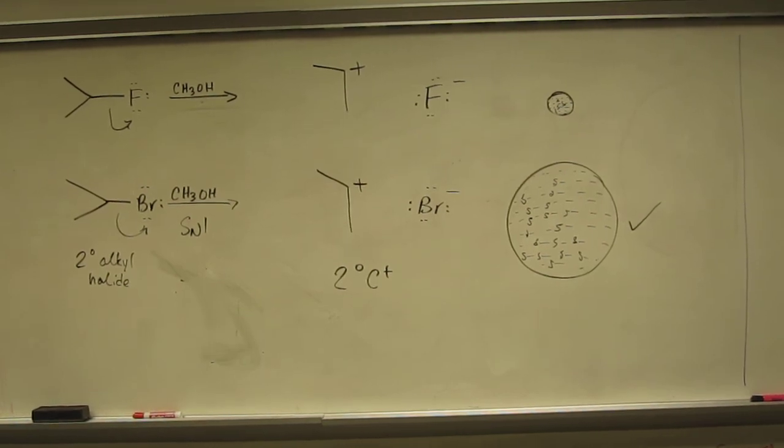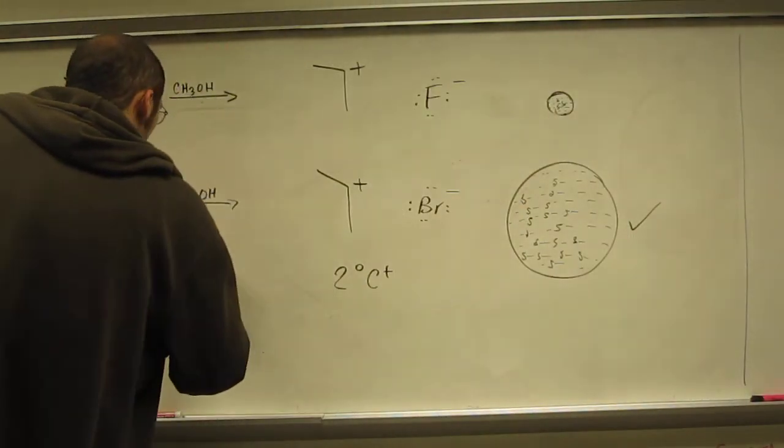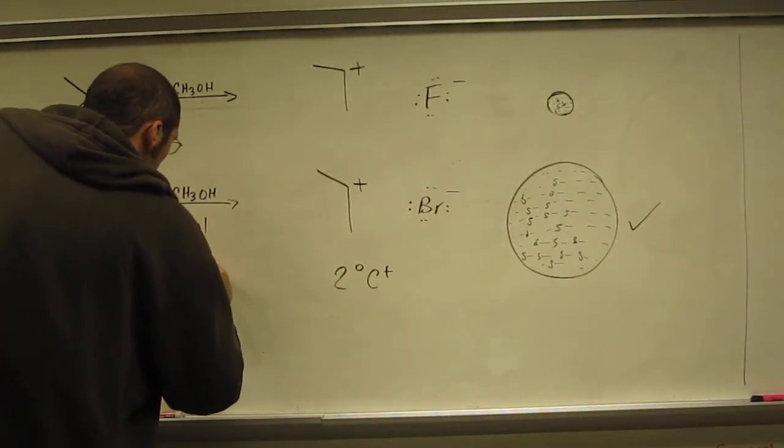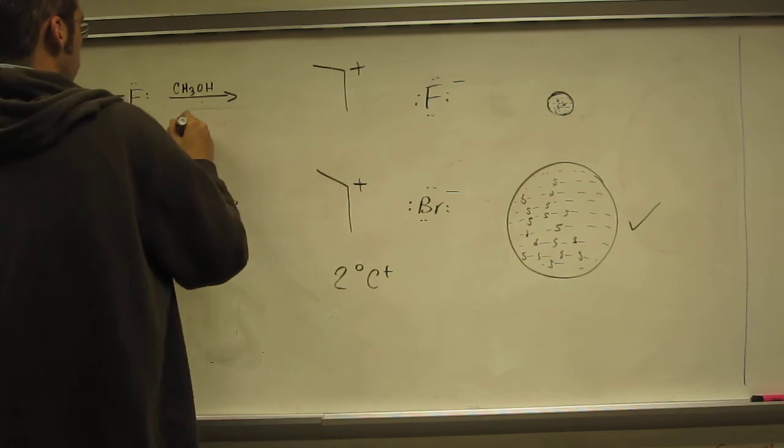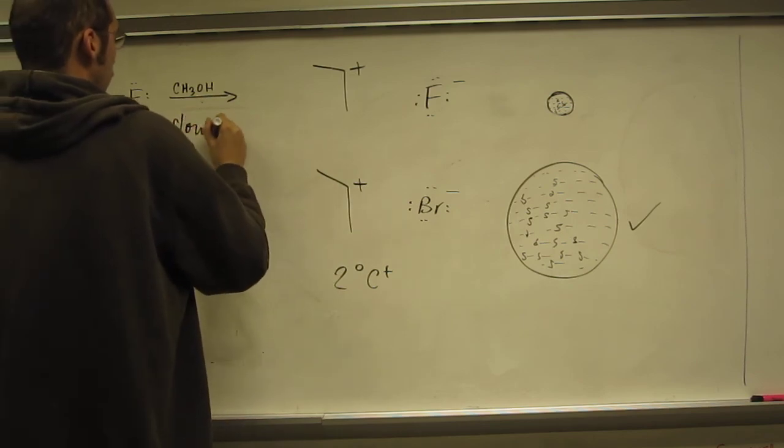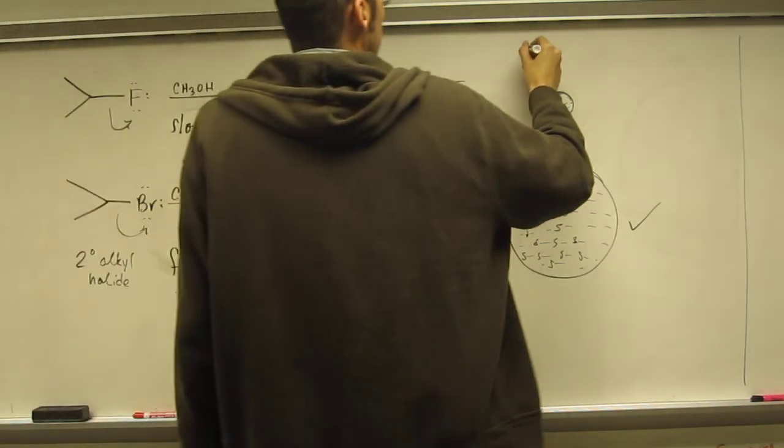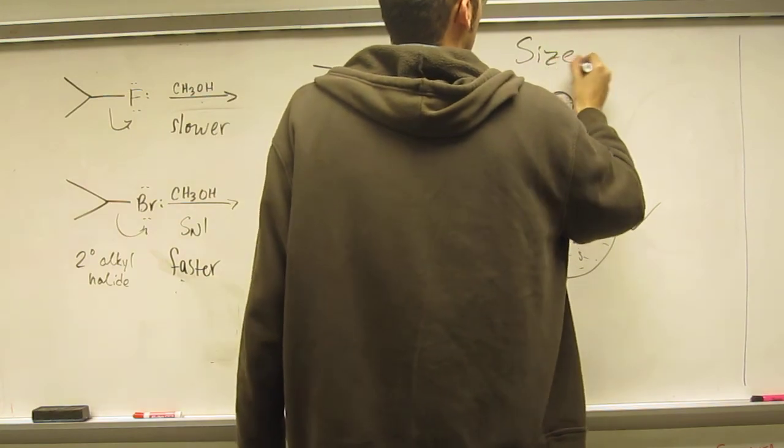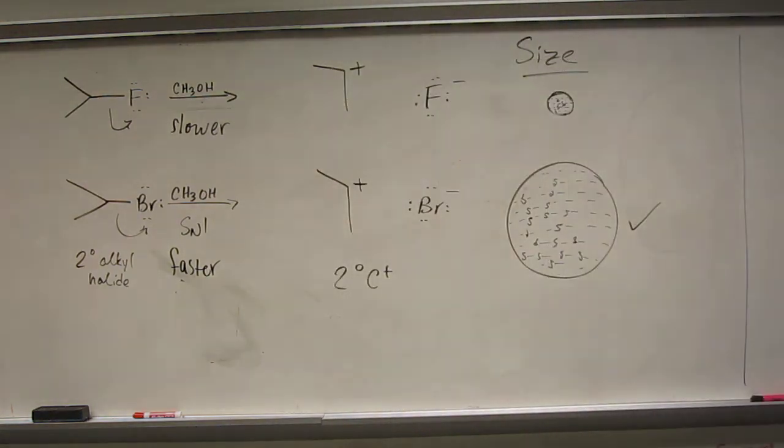So let's just finish it off, just write that, which one's the faster? Bromine is faster, the fluorine is slower. Why? Because of the size. Okay, but makes sense, right? Okay, cool.